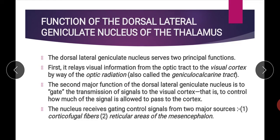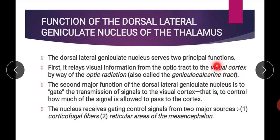The dorsal lateral geniculate nucleus of the thalamus shows two principal functions. First, it relays visual information from the optic tract to the visual cortex by way of the optic radiation. The optic radiation is also known as the geniculocalcarine tract — 'geniculo' from the geniculate nucleus, and 'calcarine' because most fibers from the visual pathway end around the calcarine sulcus in the occipital lobe.